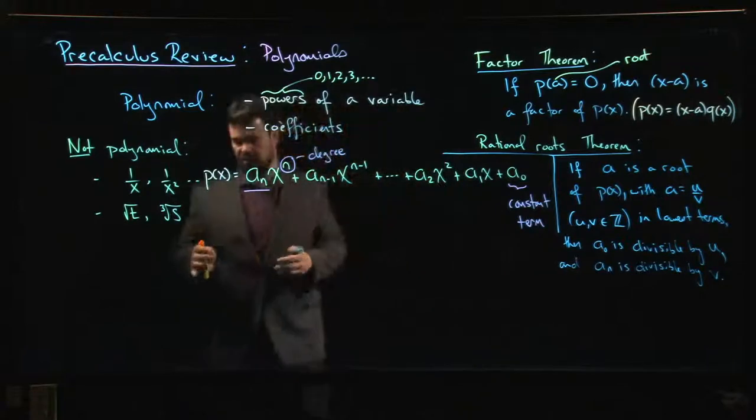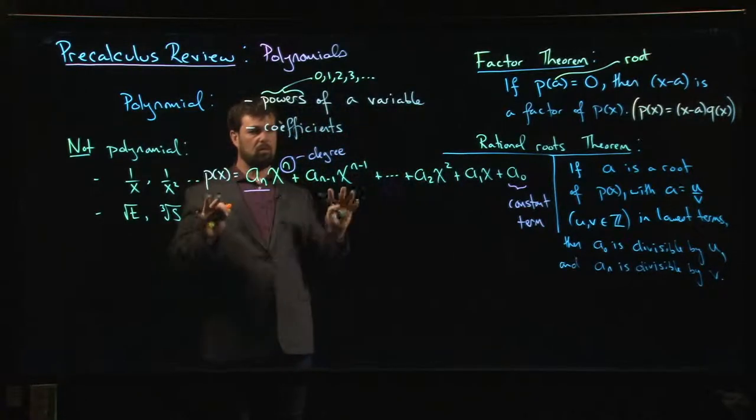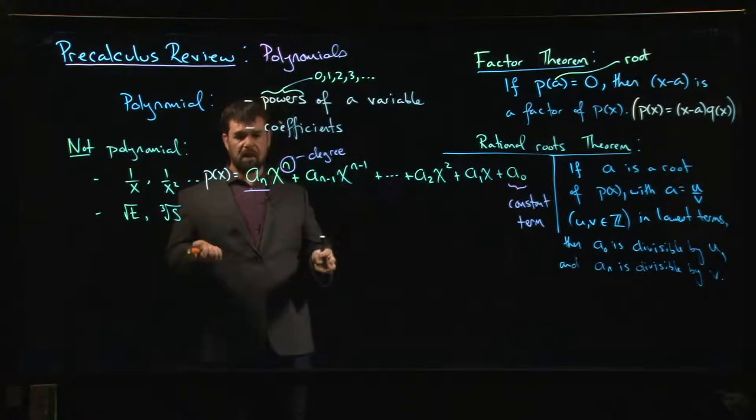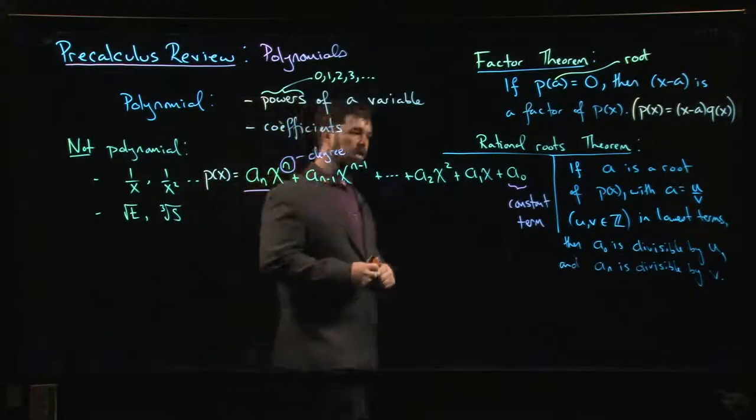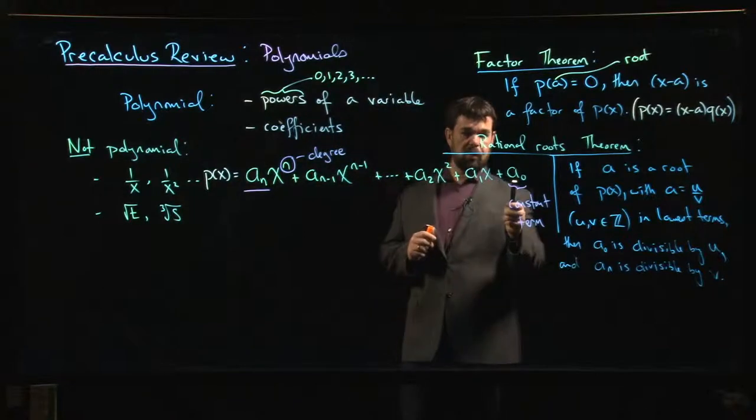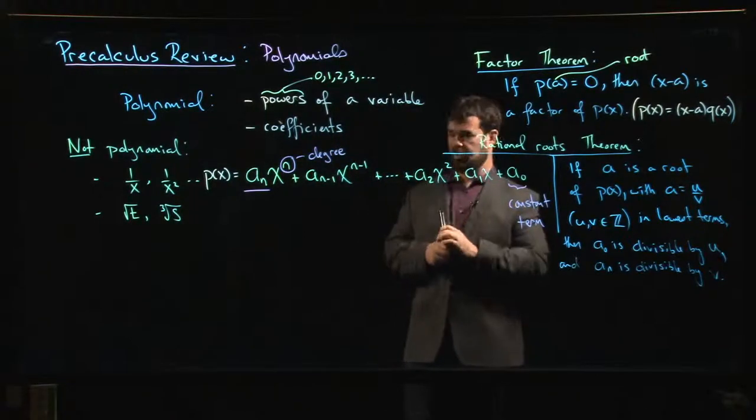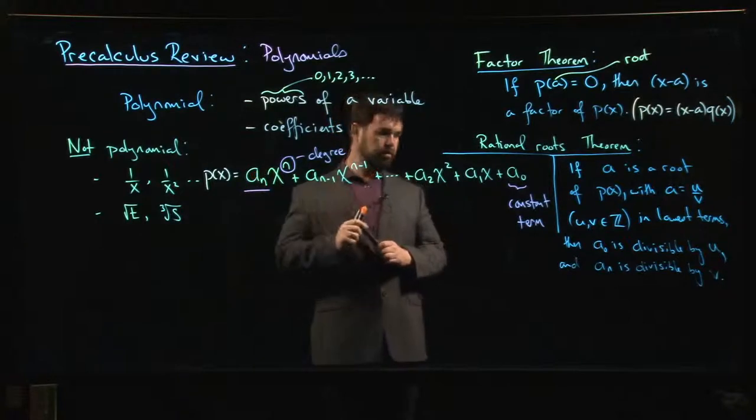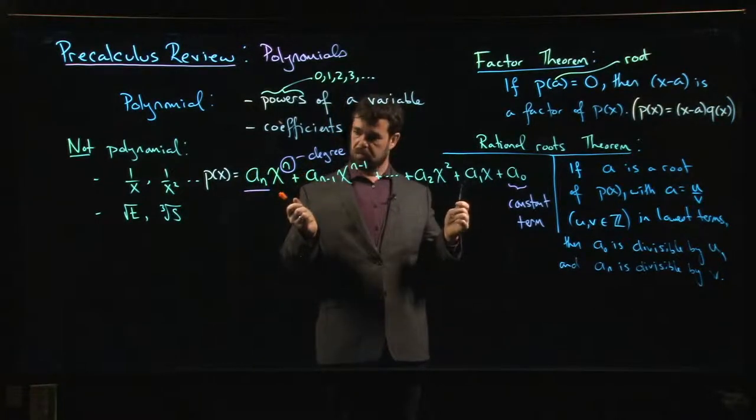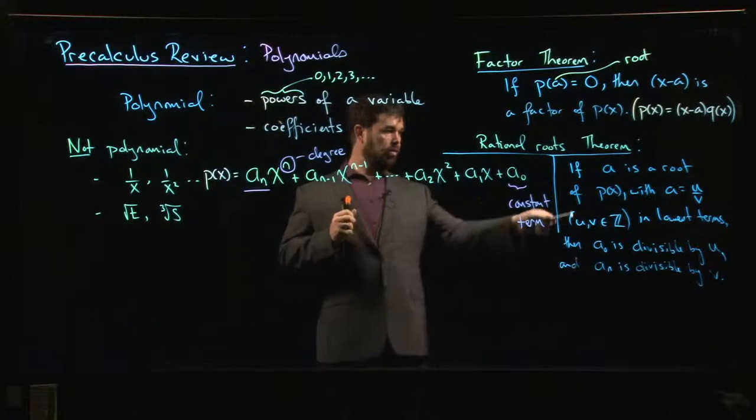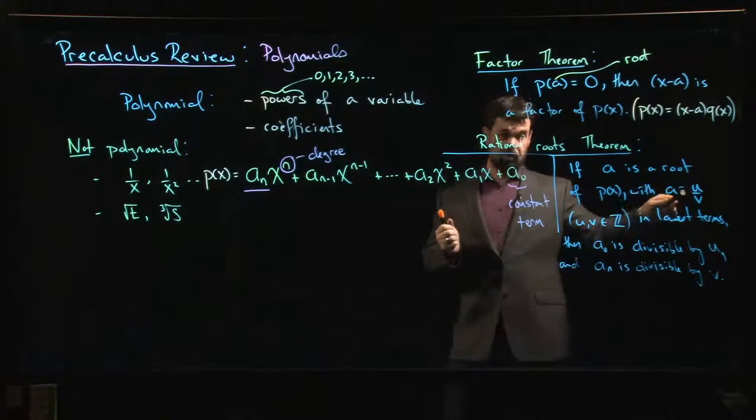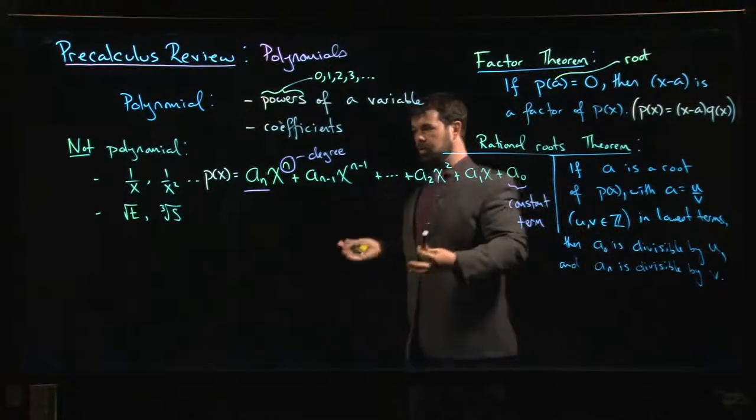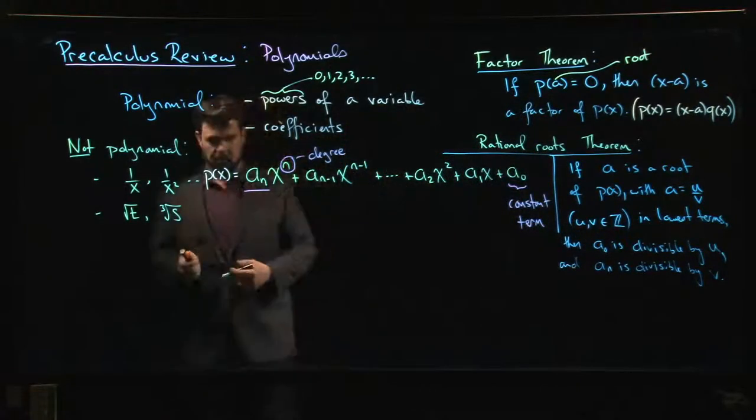So the way this works in practice is: you're looking for rational roots, so what you do is you look for all the numbers that divide evenly into the constant term, you look for all the numbers that divide evenly into the leading coefficient, and you use those to form fractions. Only fractions of that form are possible roots for your polynomial. You don't have to consider any other possibilities.